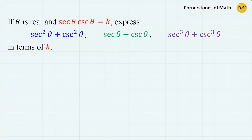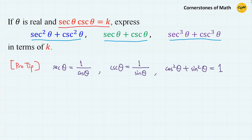If theta is real and sec(theta) times csc(theta) equals k, express sec²(theta) + csc²(theta), sec(theta) + csc(theta), and sec³(theta) + csc³(theta) in terms of k. The key here is smartly using the following trigonometric identities: secant is the inverse of cosine, cosecant is the inverse of sine, and the all-time famous identity cos²(theta) + sin²(theta) = 1.